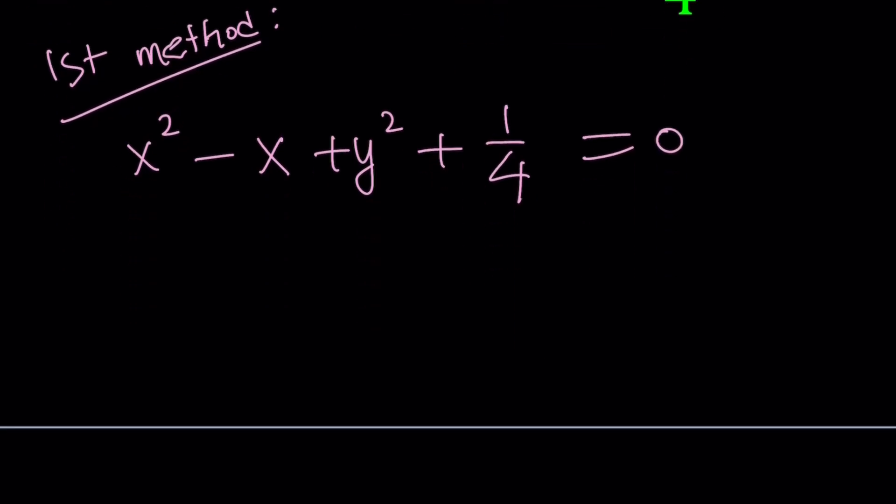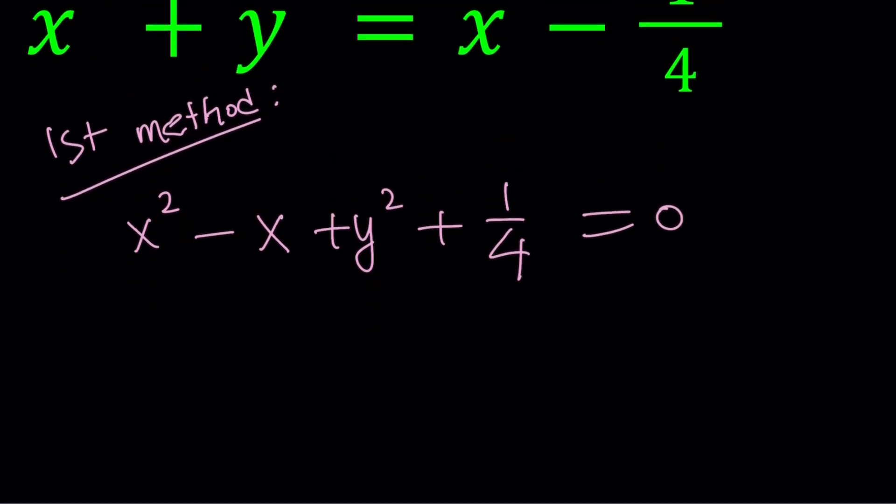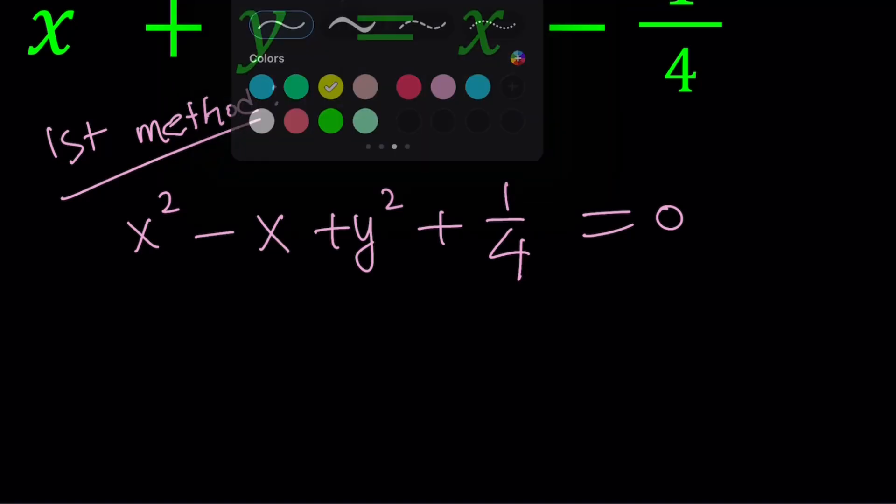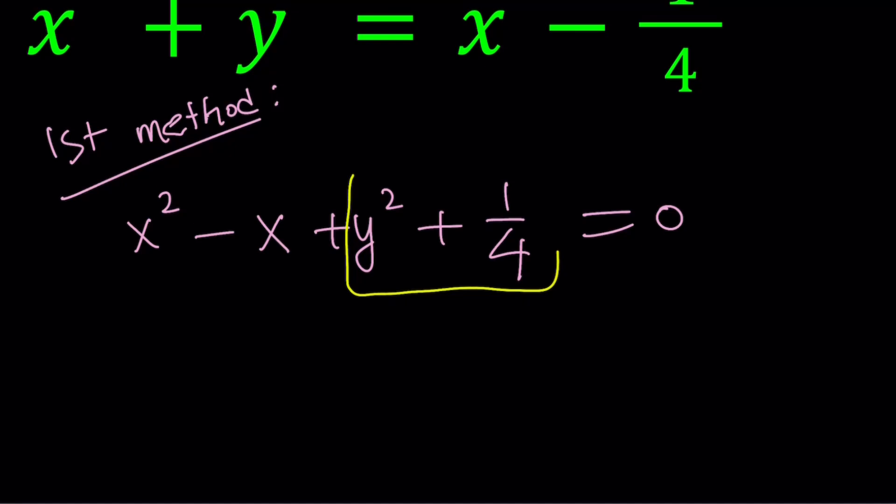Now this is a quadratic in x. I'm going to show you a graph as well, but let's do this first. To write this as a quadratic, we have the coefficient of x² being one and the coefficient of x is negative one, b is negative one, and c is y² + 1/4. a is one.